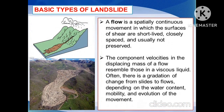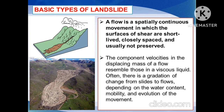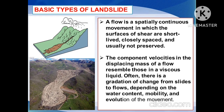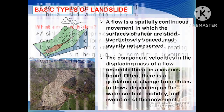Another type of landslide is a flow. A flow is a spatially continuous movement in which the surfaces of shear are short-lived, closely spaced, and usually not preserved. The component velocities in the displacing mass of a flow resemble those in a viscous liquid. Often, there is a gradation of change from slides to flows depending on the water content, mobility, and evolution of the movement.